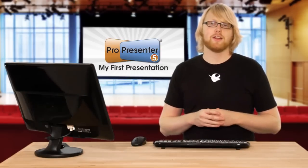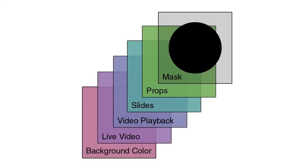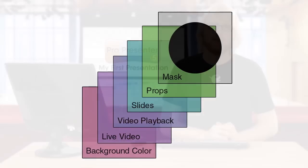The next layer is the live video layer, which contains all of your live video elements. The layer on top of that is the video playback layer, which contains your background videos and foreground videos. Then you have the slide layer, which contains things like message notes, song lyrics, Bible passages, and other slide elements. The next layer is a persistent layer called props, which stays on top of your presentation at all times. The final layer is the masking layer, which allows you to mask out areas of your final output image.